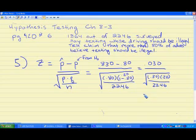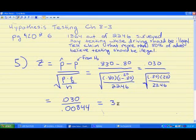What you should have is .030 on top, divided by something close to .00844, and that should give you something close to 3.55. Make sure you can get that in your calculator before you move on.